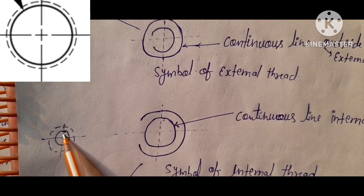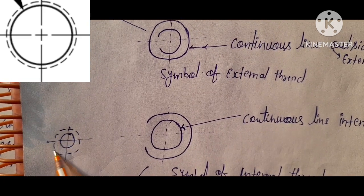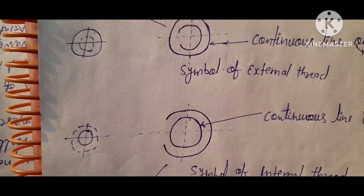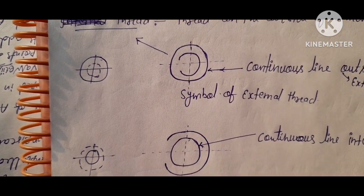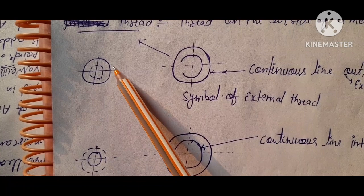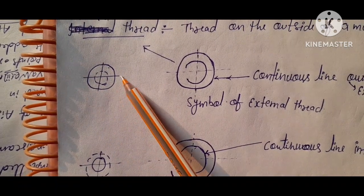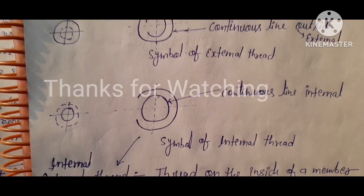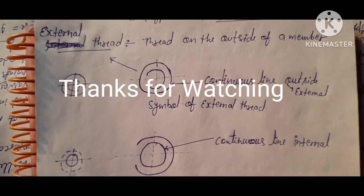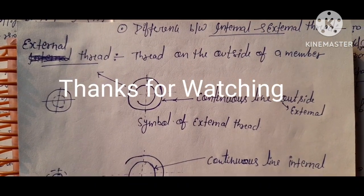Inner side continuous and outer side dotted line. This is a symbol, difference between internal as well as external thread. Outer side continuous, it means external thread. Inner side continuous, it means internal thread. This is the difference between internal and external thread.